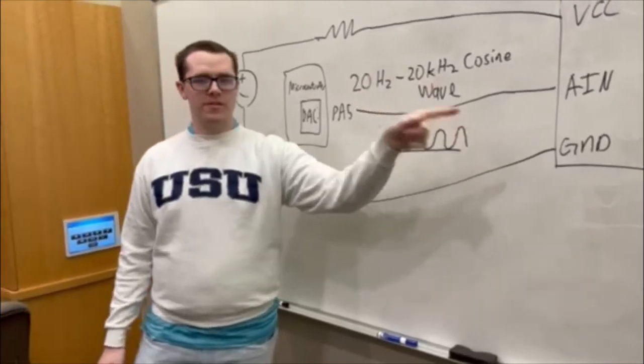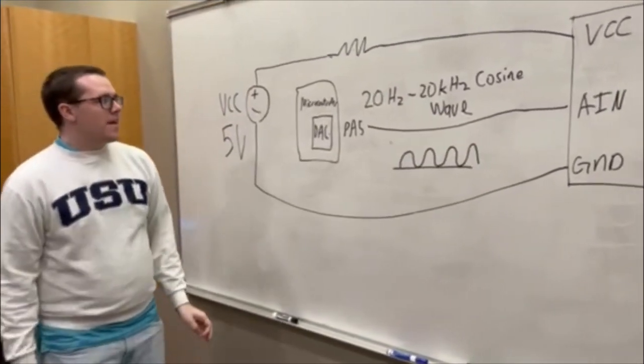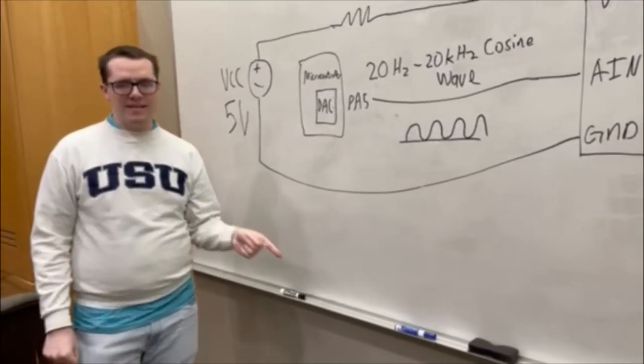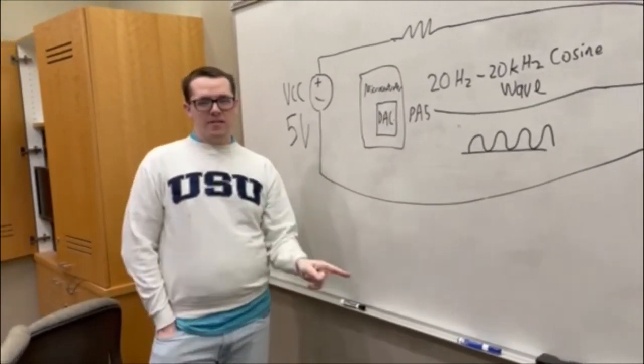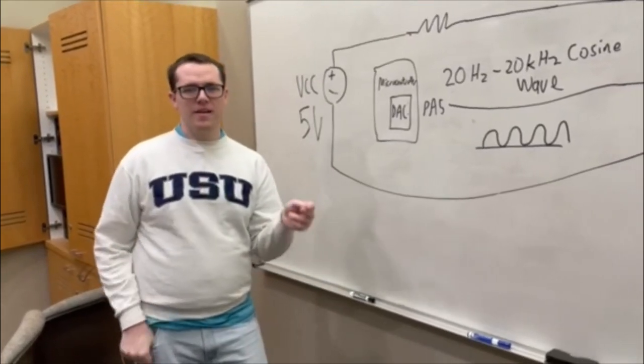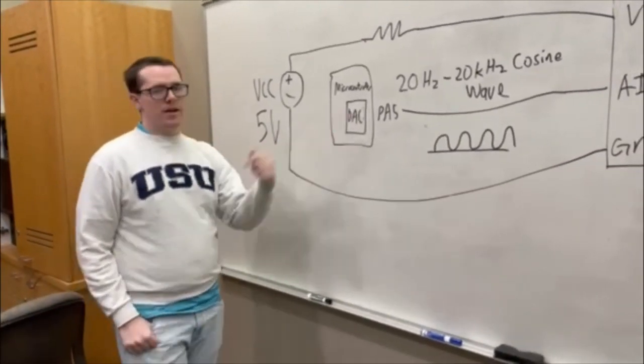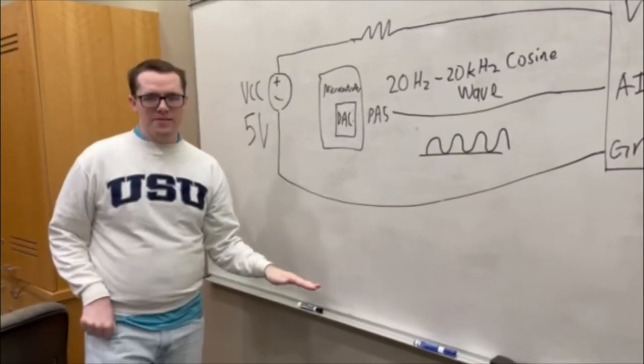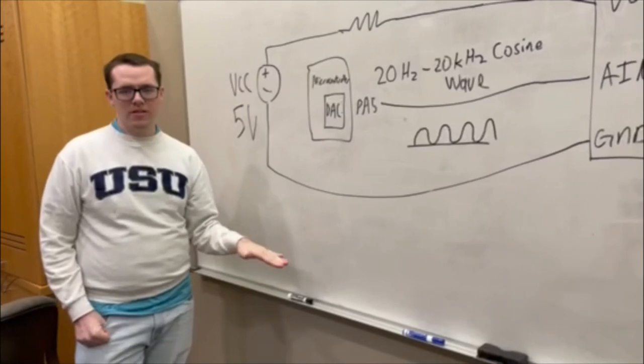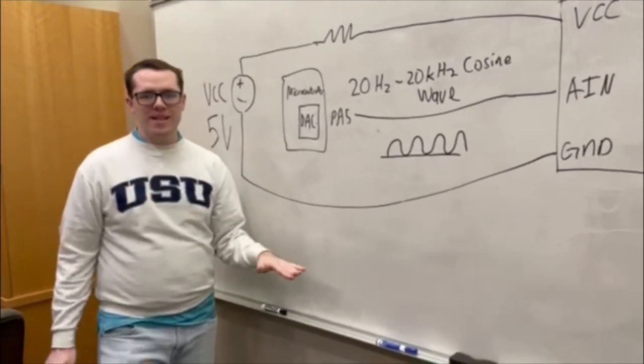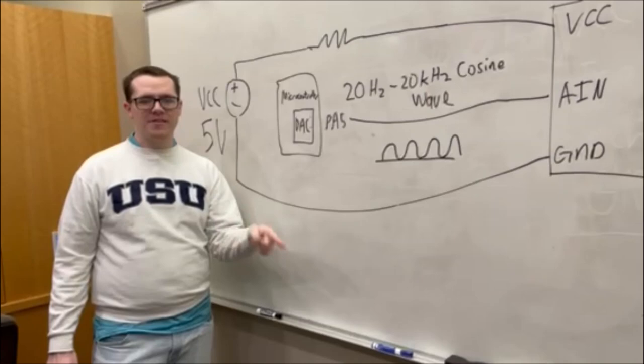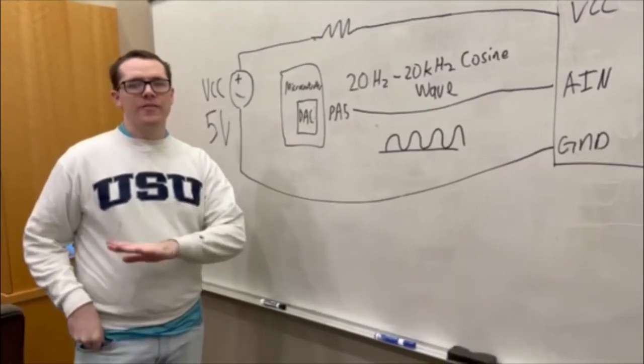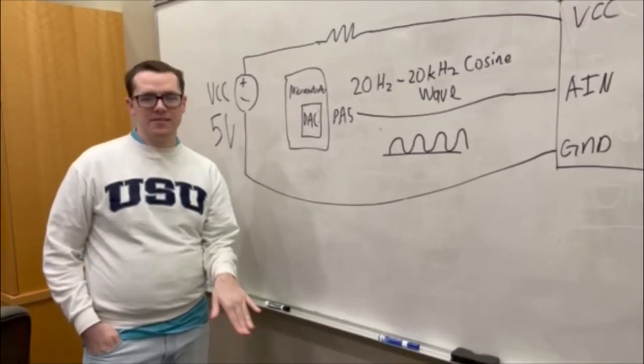To produce this cosine wave through the DAC, we utilize a lookup table to find the values to put into the DAC. This gives us a proper cosine wave with as few clock cycles as possible. Brute-forcing it by computing the cosine wave values with functions like cosine(x) would take too many clock cycles, so we use the lookup table to speed it up.